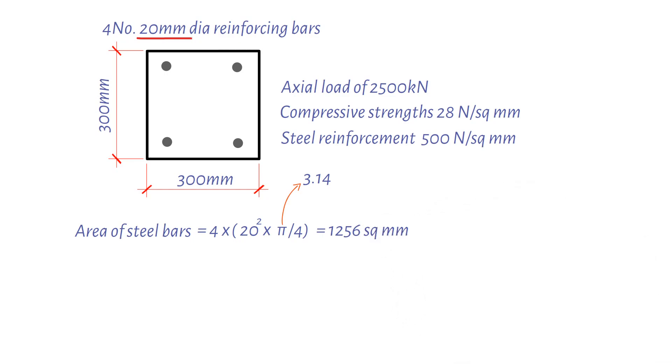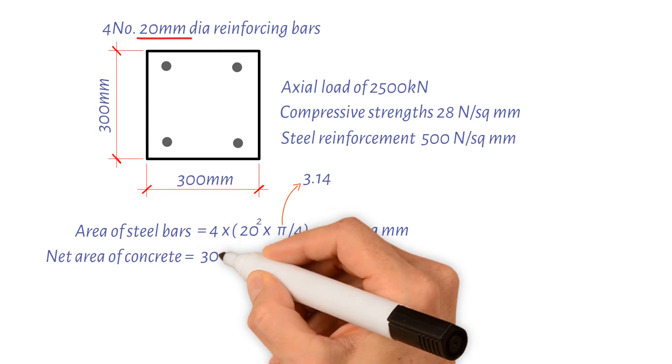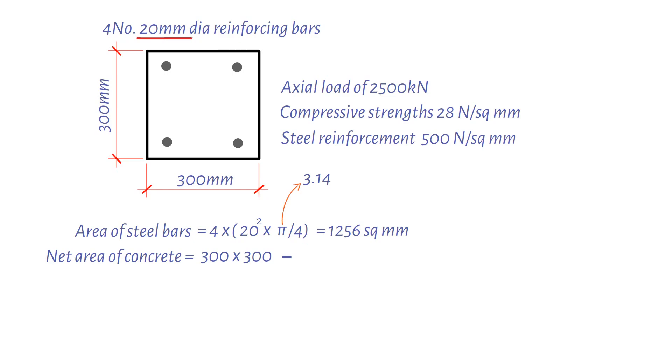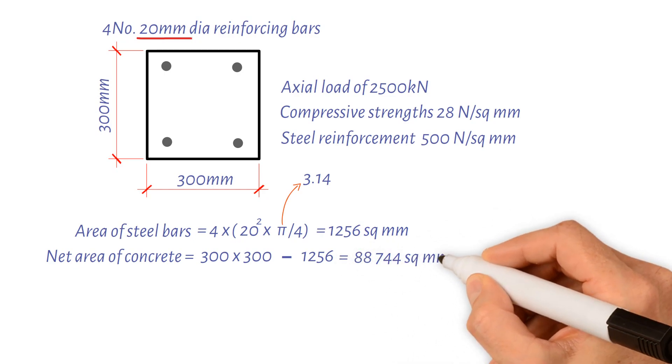Next, let's calculate the net area of concrete, which is 300 millimeters times 300 millimeters minus the area of steel bars, 1,256 square millimeters. This gives us a value of 88,744 square millimeters.